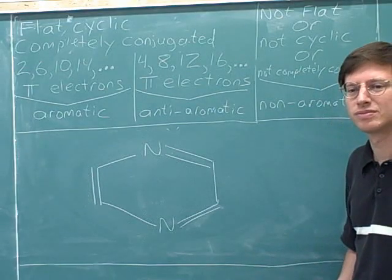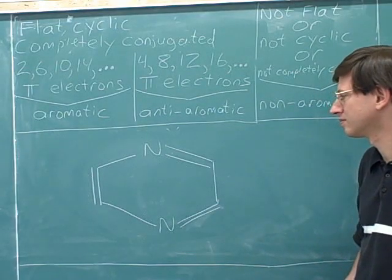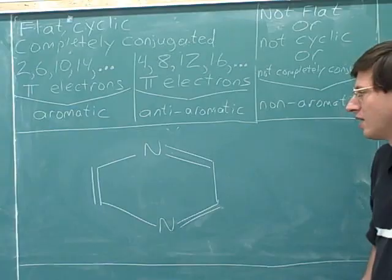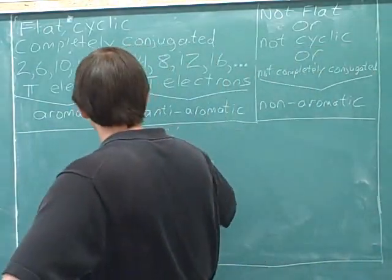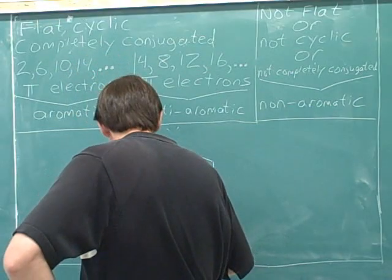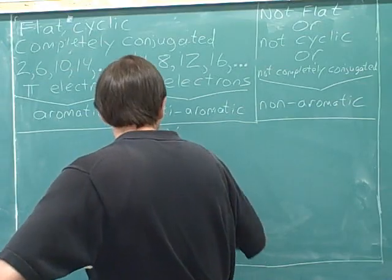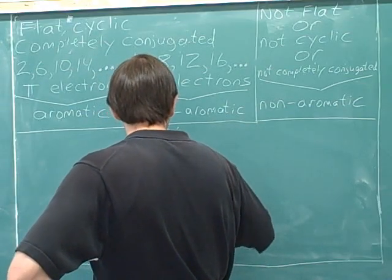Try this example. Each nitrogen has one lone pair. Each pi bond has two pi electrons.